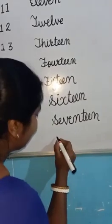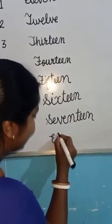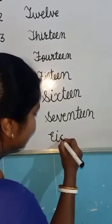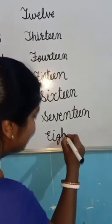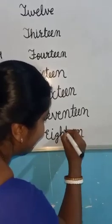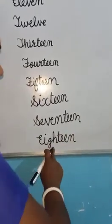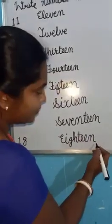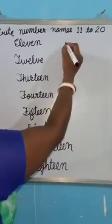The spelling of 18 is E-I-G-H-T-E-E-N, 18.